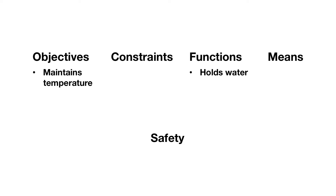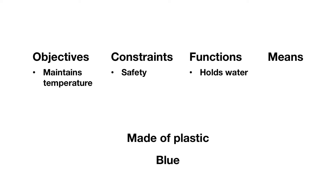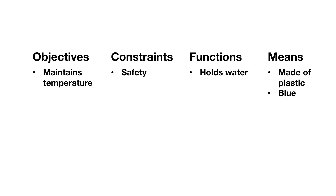What about safety? We identified that the water bottle must be safe all of the time, so let's sort that as a constraint. I'm surprised that made of plastic and blue are on our list — these are options for achieving a particular function, and we could select just as many others. They could be red, it could be yellow. Therefore, we're going to organize both of these as means.